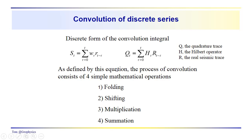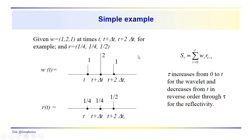The process we use to carry out convolution is a sequence of steps: folding or flipping — in this case we'll flip the reflectivity — then shift, multiply, and sum. The best way to illustrate this is to go through some simple examples. Notice that in the summation, tau increases from 0 to t for the wavelet, and decreases from t in reverse order through tau for the reflectivity, where t is the particular sample time we're looking at.